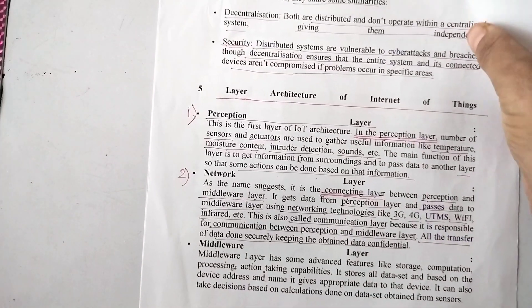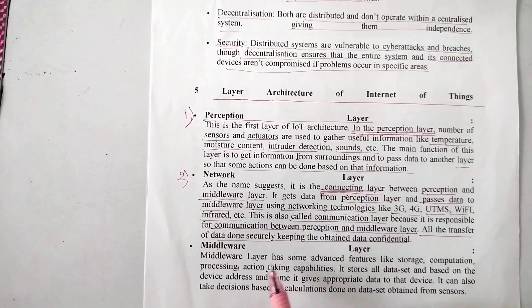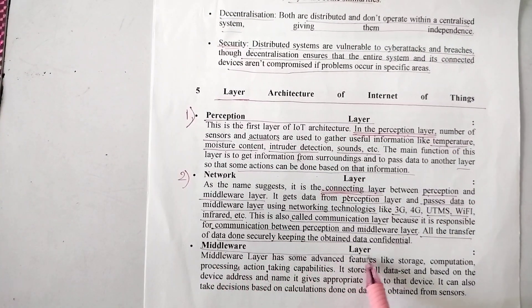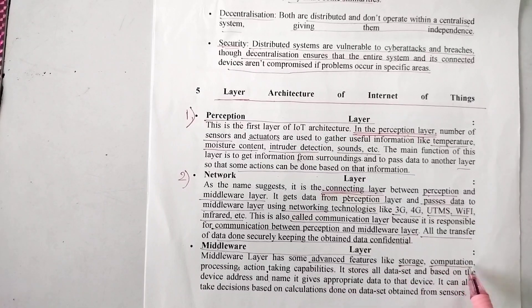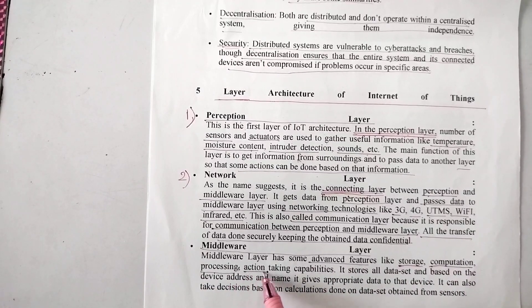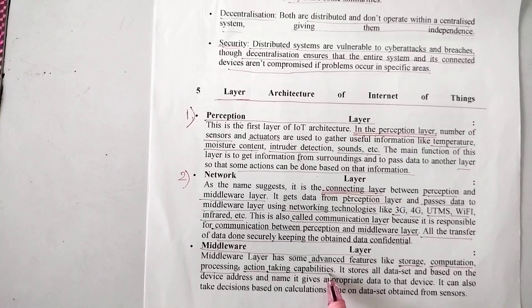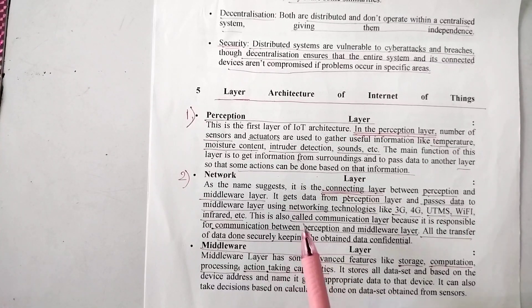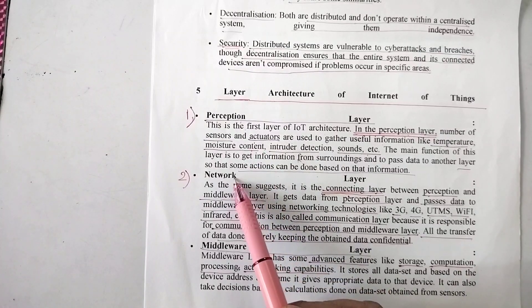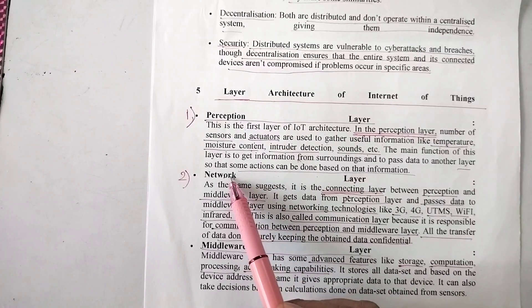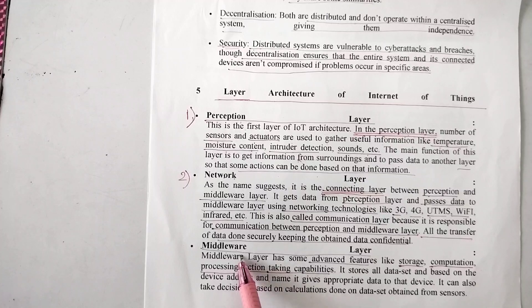Now, let us look at the middleware layer. The middleware layer has some advanced features like storage, computation, processing, and action-taking capabilities. Whatever collected data is passed from the perception layer to the network layer, and then the network layer passes this data to the middleware layer.